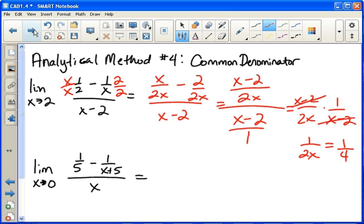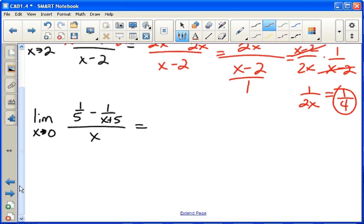Last example. I know this video has been a bit long. Thanks for bearing with me. For this last example, we have one fifth minus one over x plus five. We need to multiply this one by x plus five over x plus five. And this one by five over five.